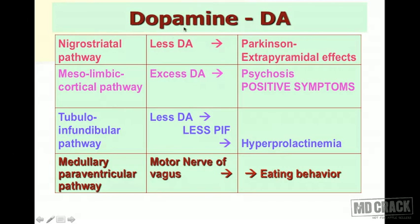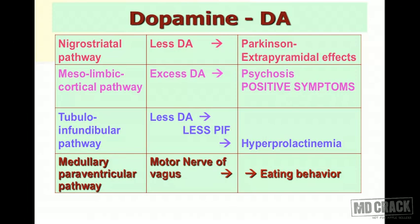This slide shows important dopamine pathways in the brain. In the nigrostriatal pathway, less dopamine leads to Parkinson's disease and extrapyramidal effects. In the mesolimbic-cortical pathway, excess dopamine leads to psychosis — these are called positive symptoms in schizophrenia: elation, violent behavior, aggressive behavior, and agitation.